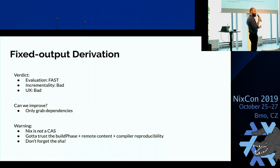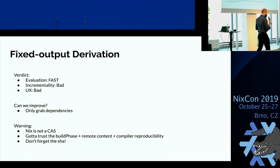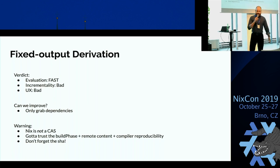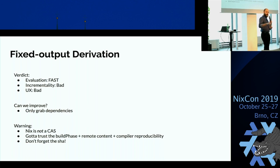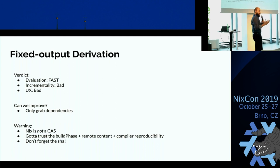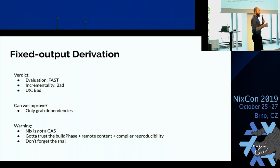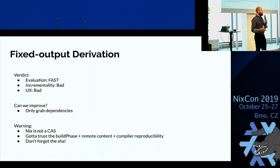Evaluation with fixed output derivation is super fast because Nix just checks the checksum. Incrementality is pretty bad because whenever you change anything, you have to rerun. The UX is the worst, because whenever a single input changes — say your user adds a dependency for a Node.js program — you're going to have to change the hash by hand. And it gets worse if you forget to change it, because Nix will see the old hash in the store and think the build is fine, even though it would generate new output.